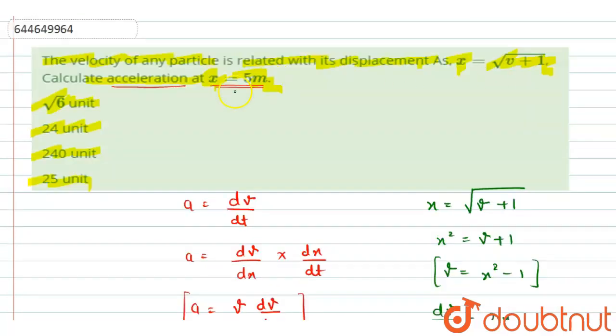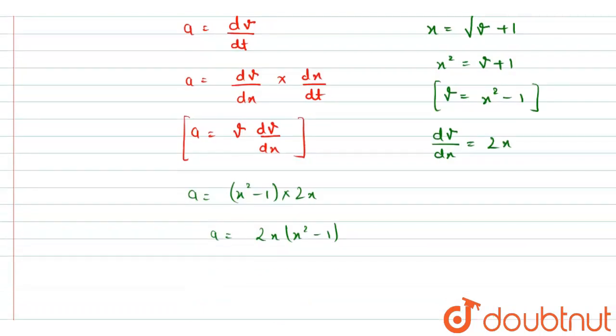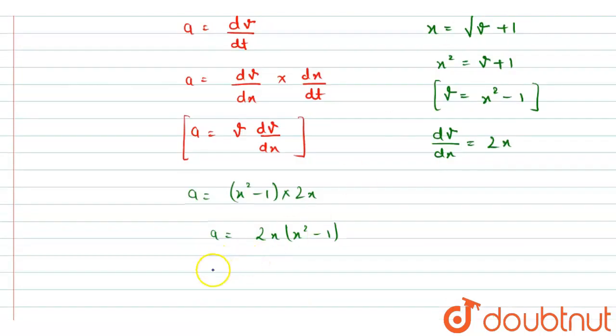And we have to find the acceleration at 5 meters. So putting the value x equals to 5, we will get acceleration at x equals to 5 meters. So this will be equal to 2 times 5 multiplied by 5 squared minus 1.